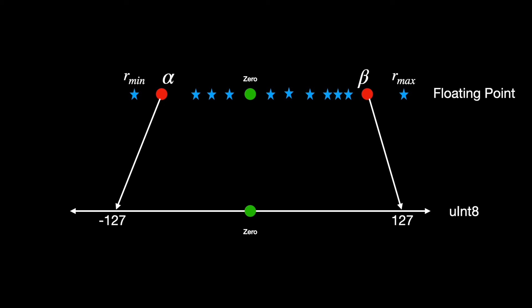To learn how we can choose the scale and zero factor, let's take an example input distributed like this in our real number axis. The scale factor essentially divides this entire range of the input right from the minimum value rmin to the maximum value rmax into uniform partitions.